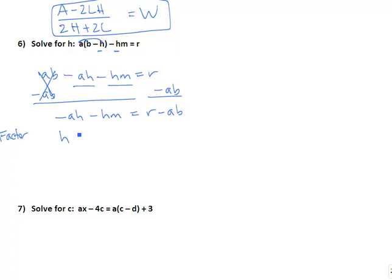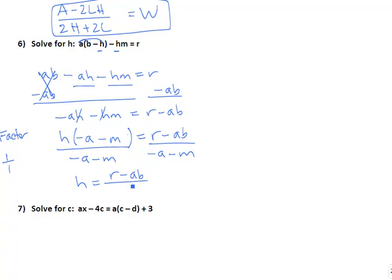So I pull out my h in parentheses, we're going to write what's left over, which in this case would be negative a minus m. Then our last step is to divide by what's in parentheses, so I'm going to divide both sides by negative a minus m. So h equals r minus ab all over negative a minus m.